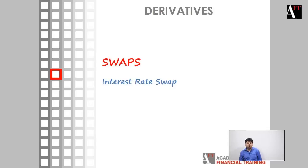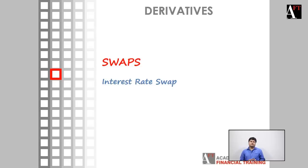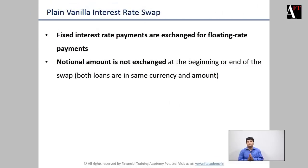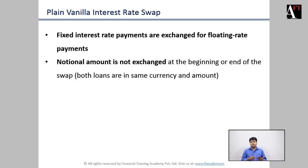Coming to the next topic of our discussion on swap contracts is the topic of interest rate swaps. We saw currency swaps as a previous example. The interest rate swap takes into account the position as a fixed rate payer or as a floating rate payer, and that's where a party tries to enter into a swap contract when it wants a different line of exposure.